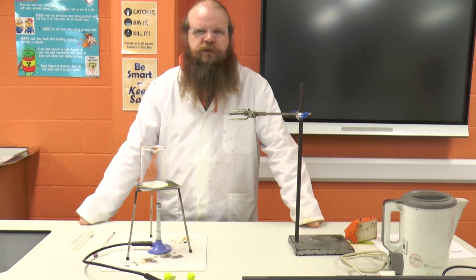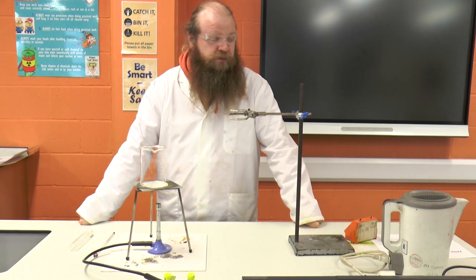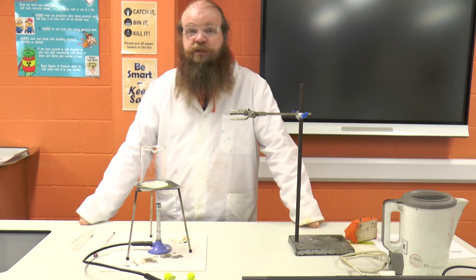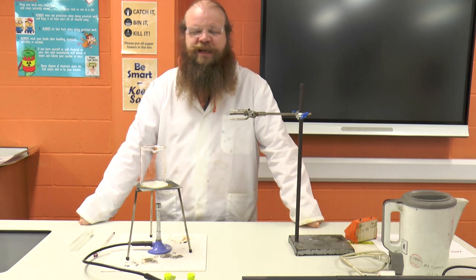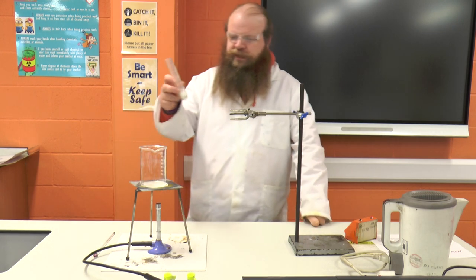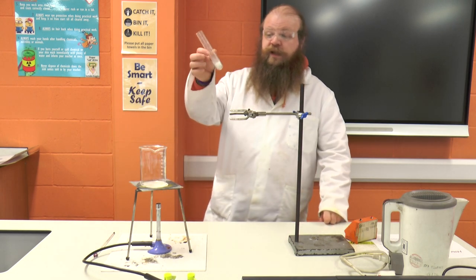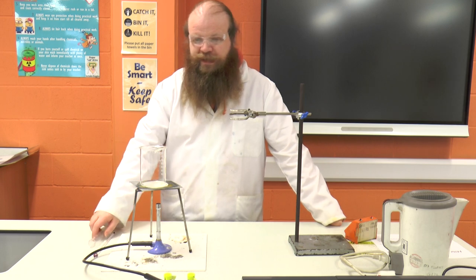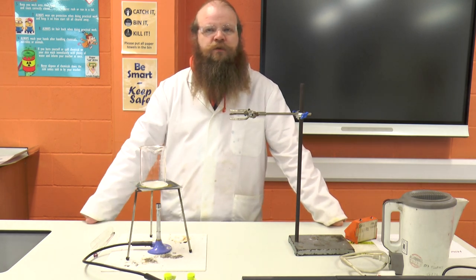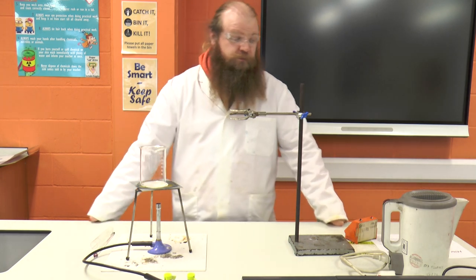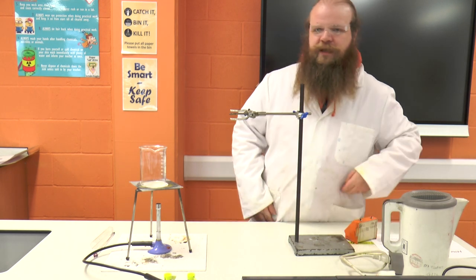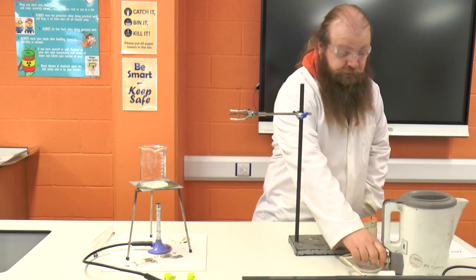Today we're going to be looking at how to produce a cooling curve and we're going to use the chemical stearic acid for that. Stearic acid is a solid at room temperature but it has a melting point below the boiling point of water, so it is relatively easy to melt in a lab situation.